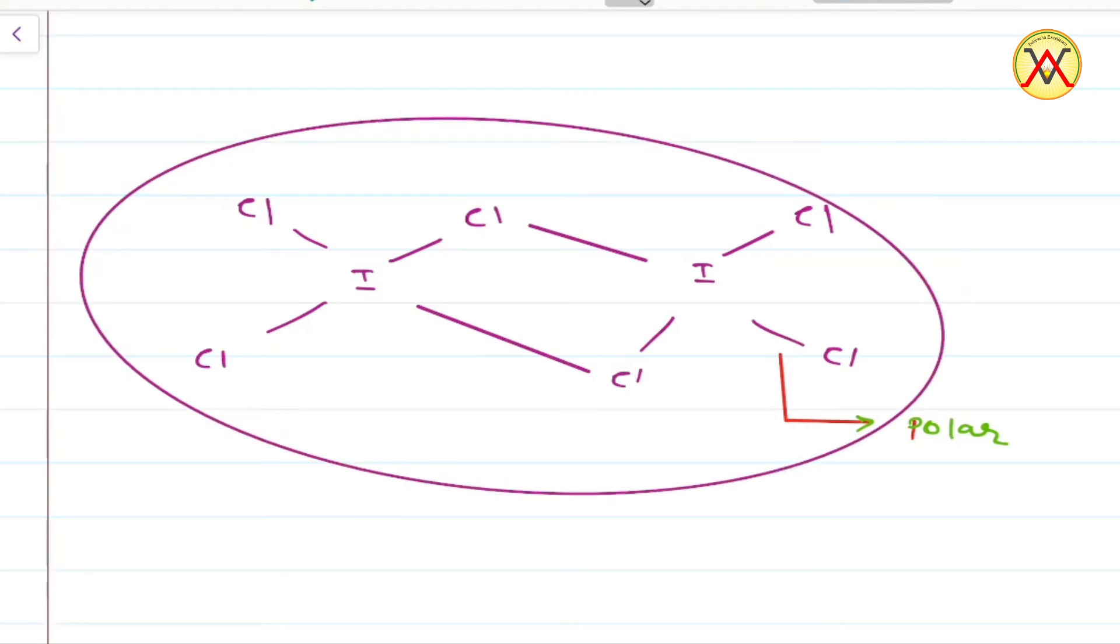In I2Cl6, the molecule has polar bonds, but the molecule is non-polar and the dipole moment is equal to zero.